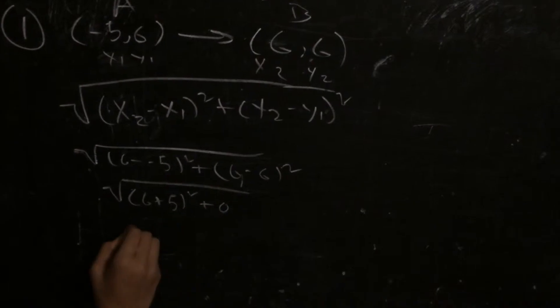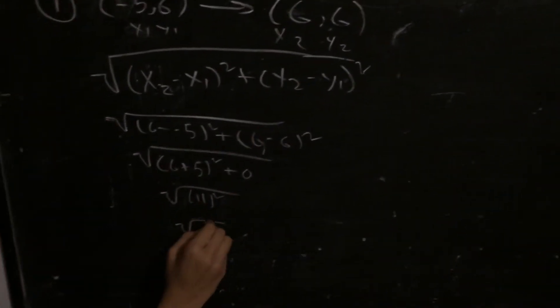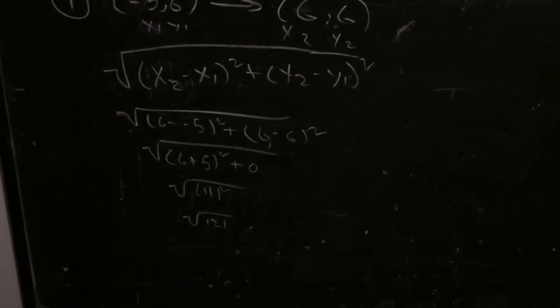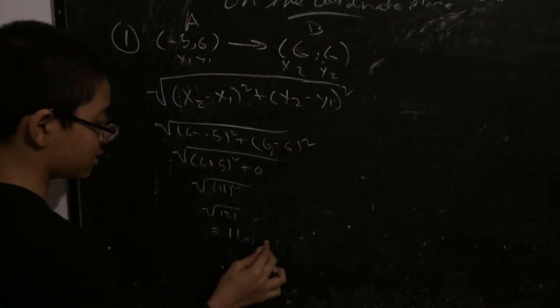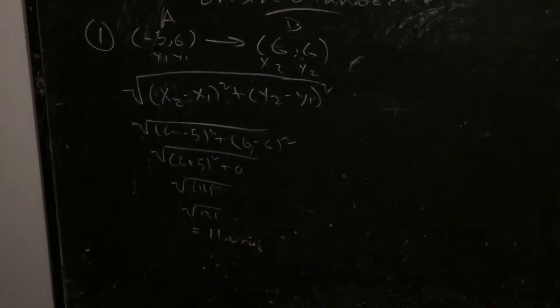So this is 6 plus 5 squared plus 0. This is 11 squared, so this is the square root of 121 which is equal to 11 units.